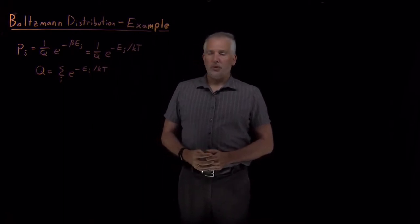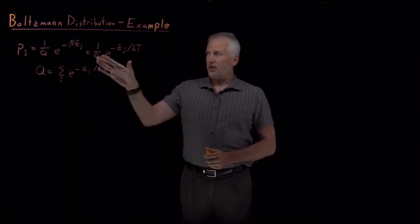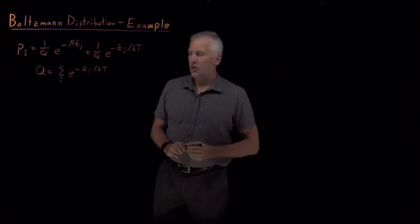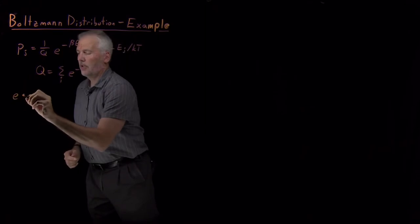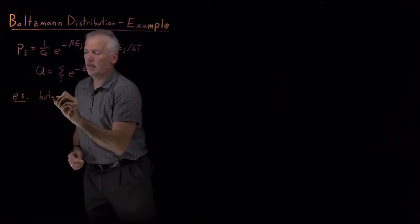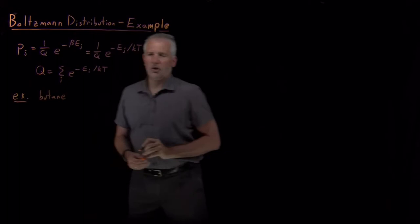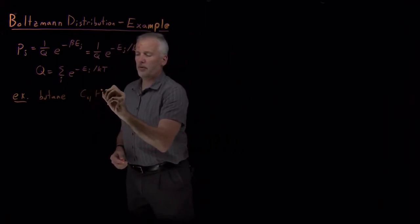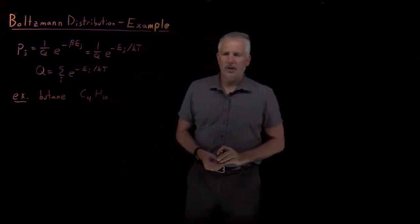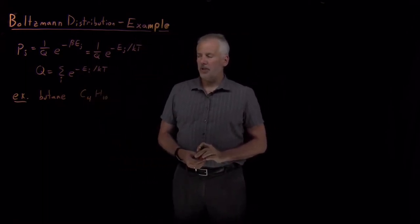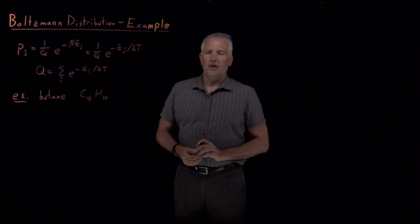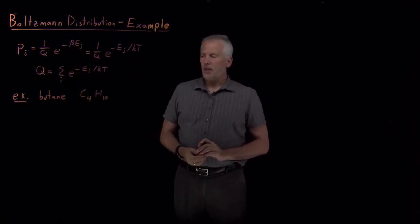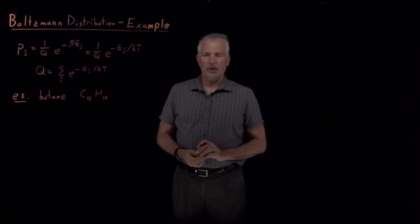We're now in a position where we can do some numerical examples and see what this Boltzmann probability distribution means for some real chemical problems. We've worked a few examples with butane before, and I've just given you the probabilities, not the energies. But we're now in a position to see where those probabilities come from.